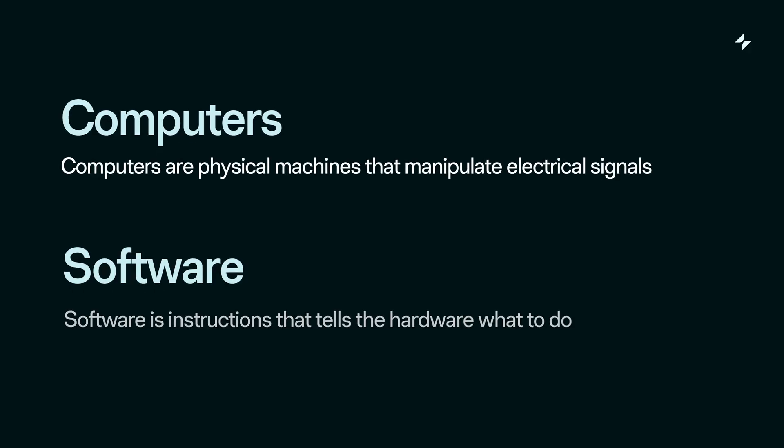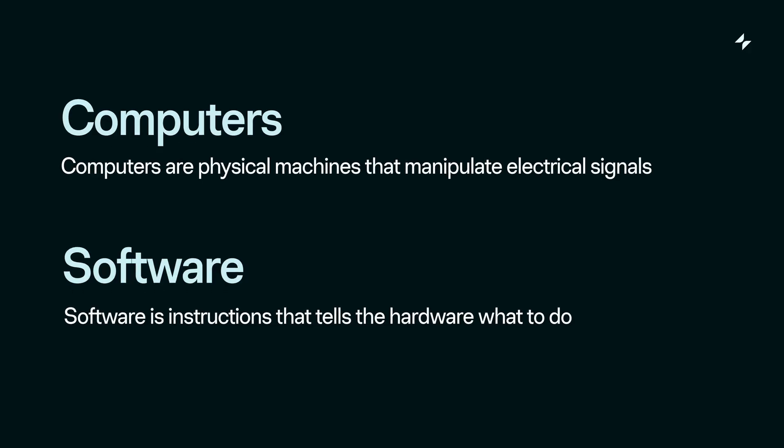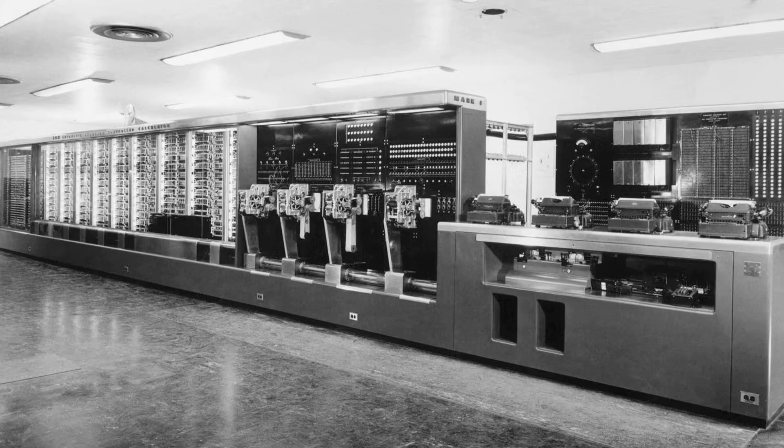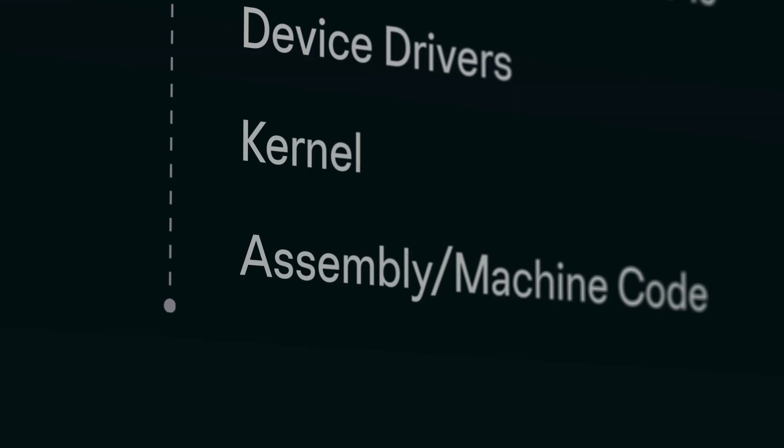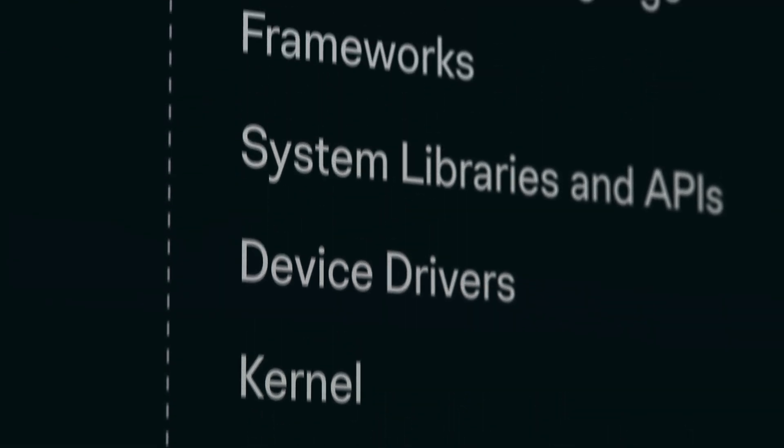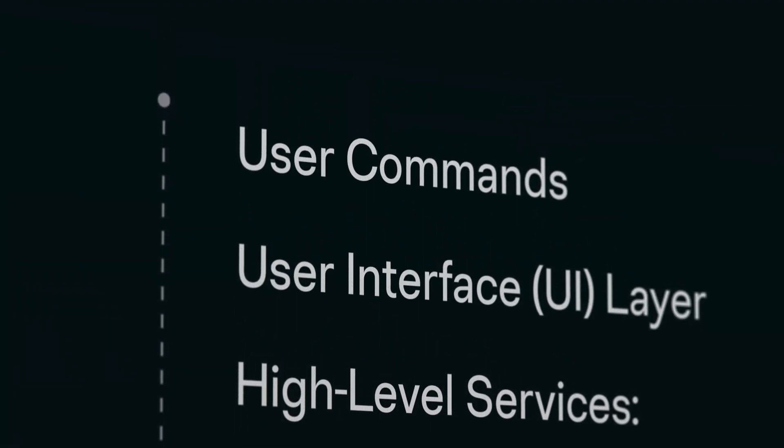So let's start with two really fundamental questions: what are computers and what is software? Computers are physical machines that manipulate electrical signals to process data, and software is really a set of instructions that tells the hardware how to perform tasks. At the lowest level you have the logical operations and data storage, and then at the highest level you have the user experience.